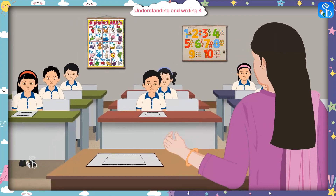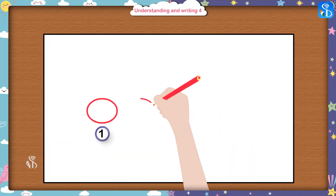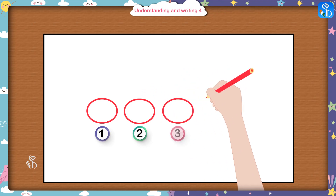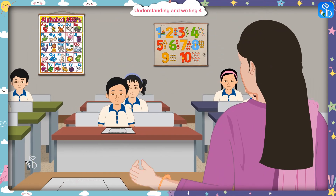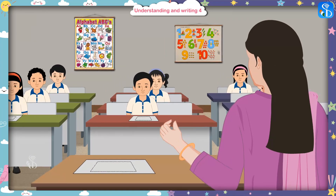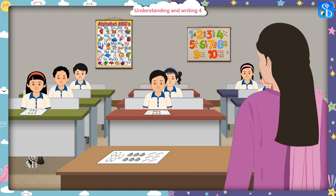Now you have understood four very well. Draw four beads in this square — one, two, three, four. We finished drawing! Now please repeat after me: three and one make four. Three and one make four.